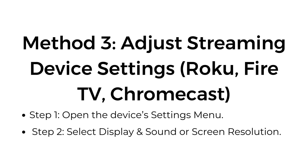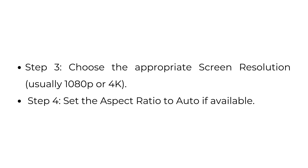Method three: Adjust streaming device settings — Roku, Fire TV, Chromecast. Step one, open the device settings menu. Step two, select display and sound or screen resolution. Step three, choose the appropriate screen resolution, usually 1080p or 4K. Step four, set the aspect ratio to auto if available.